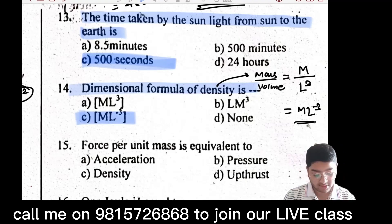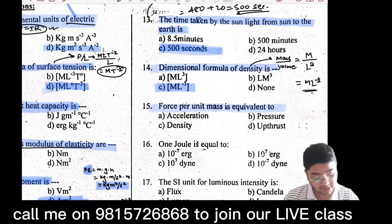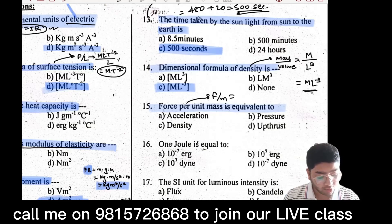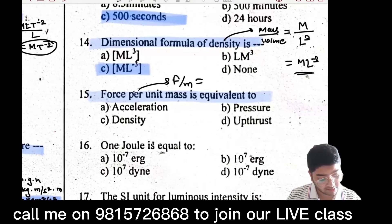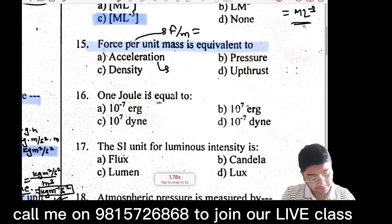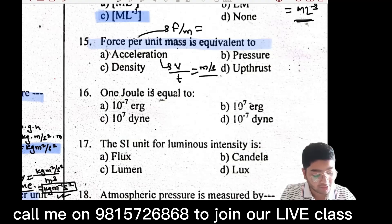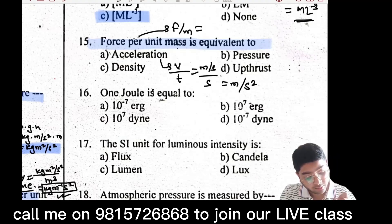Force per unit mass equals acceleration. Force upon mass: force dimension is M·L·T⁻², divide by M, giving L·T⁻² — which is acceleration. Distance upon time gives velocity, and velocity upon time gives acceleration: meter per second square.